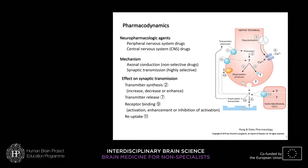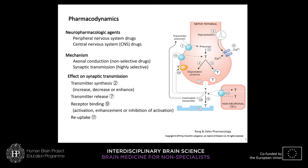Here you can see schematically represented different processes that can be modulated by drugs: for example, transmitter synthesis from precursor to transmitter, the release of the transmitter from the presynaptic neuron into the synapse, receptor binding of the neurotransmitter at the post-synaptic membrane receptor, and the re-uptake of the neurotransmitter from the synapse.